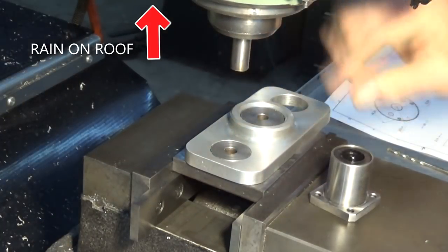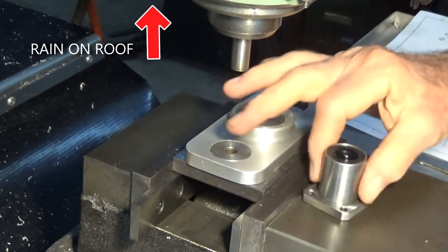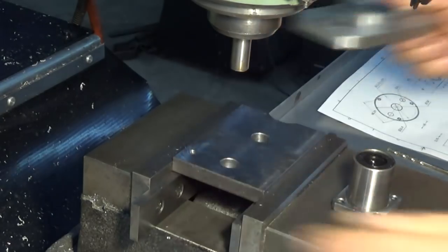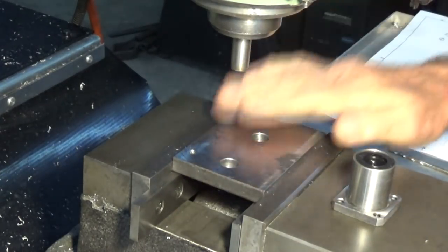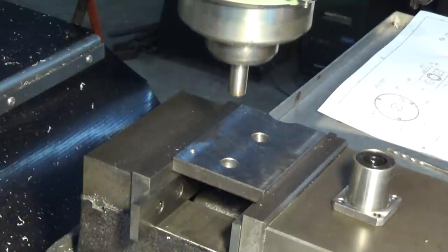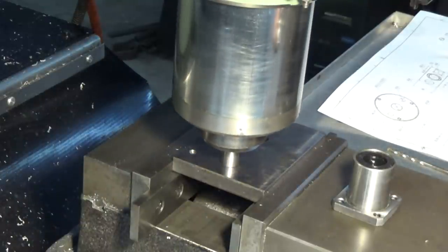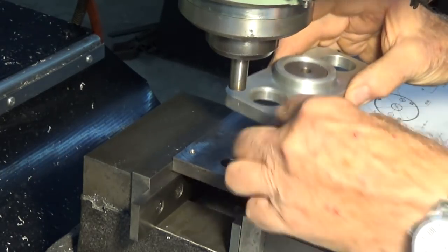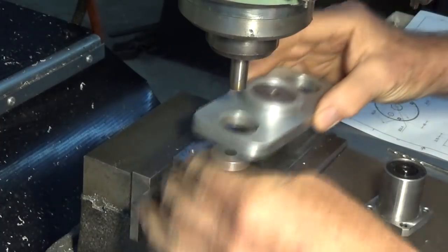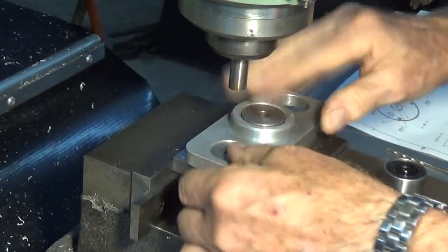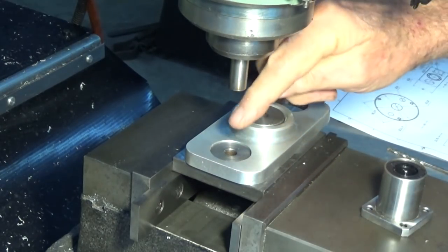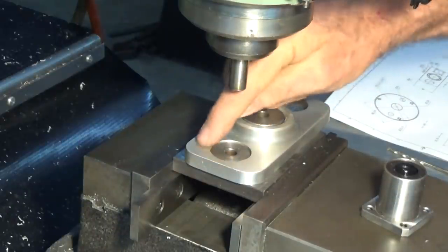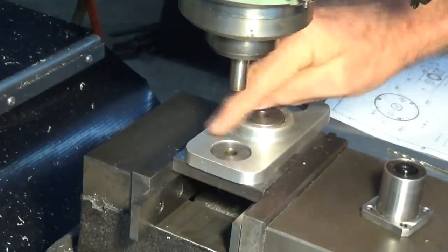The next operation on this casting is to get the holes drilled to mount the linear bearings. I've put the fixture back in the vise. I should never have taken it out, actually. But I've lined up a 12-millimeter pin with that existing hole, and I can put the bushes back in the casting.